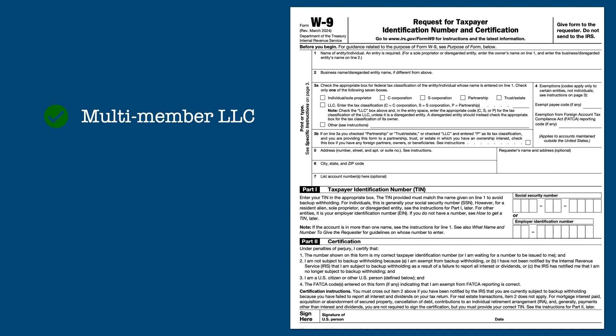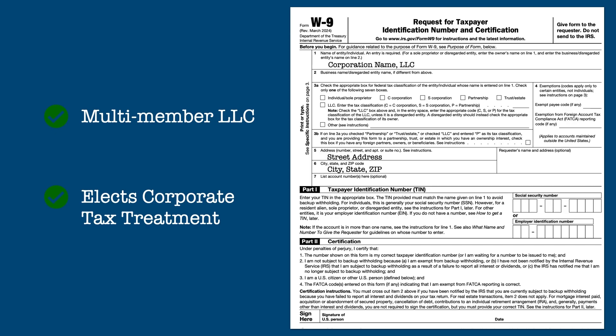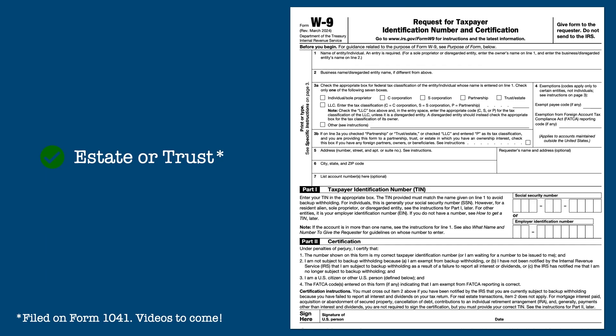For multi-member entities that operate as LLCs and elect a corporate structure for tax purposes, the name of the LLC is entered on line 1, the LLC box is checked in Box 3A, and the type of tax treatment — C or S — is entered to the right of the checkbox. The entity's EIN is entered in Part 1, and any officer of the LLC can sign the form. Finally, all estates and trusts enter the name of the trust or estate on line 1 and check the trust/estate box in Box 3A. The Employer Identification Number of the entity is entered in Part 1, and the administrator of the estate or trust, otherwise known as the fiduciary, signs and certifies the form.